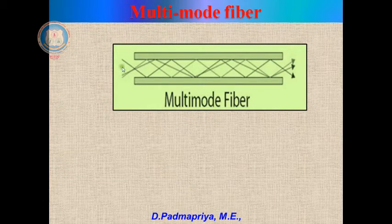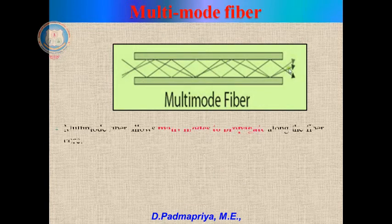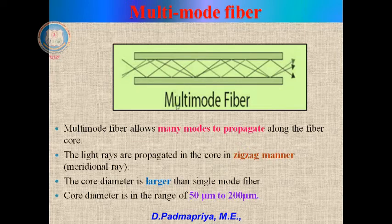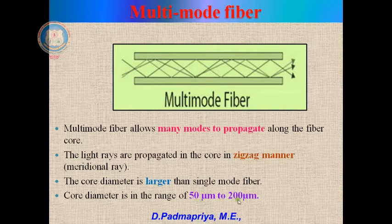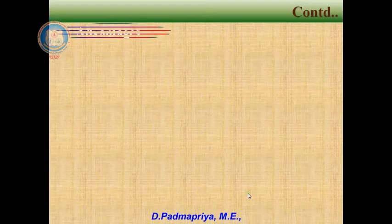Multimode fibers. As you can see in this diagram, multimode fibers allow many different rays to propagate inside the core — that is why it is called multimode fiber. These rays take a medial path, that is, a zigzag path. The core diameter is larger here, ranging from 50 to 200 micrometers, which is why multimode fibers allow many modes to propagate.